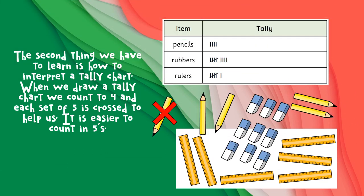The second thing we have to learn is how to interpret a tally chart. We use tally charts when we do our merits. When we draw a tally chart, we count to four and each set of five is crossed to help us — it is easier to count in fives.